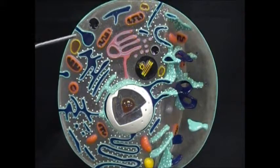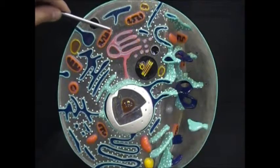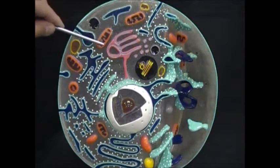From there, the Krebs cycle and the electron transport chain are going to be occurring within this organelle called the mitochondria.